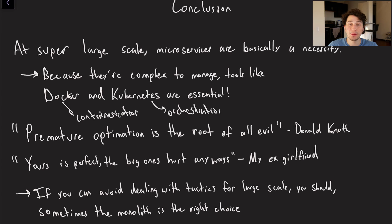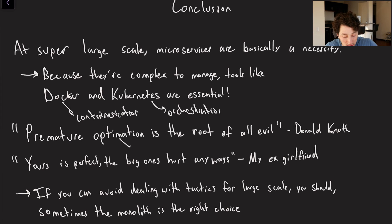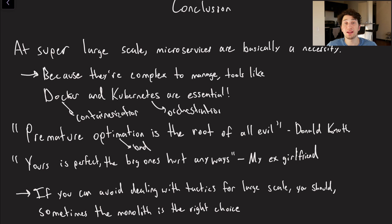To finish off this series, I want to give a quote: 'Premature optimization is the root of all evil,' by Donald Knuth. He's a genius and is right about that. If you don't really need microservices, you don't have to actually go and build them out. Sometimes a monolith is going to make your life easier. If you're just building a personal project and you anticipate you're going to have a hundred users at most, you probably don't need a bunch of disjoint services — just write it all in the same app.